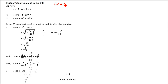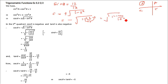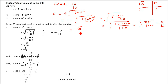Next question: sin θ = 12/13 and θ lies in the second quadrant. We need to find sec θ + tan θ. In the second quadrant, cos is negative, so cos θ = -√(1 - sin²θ) = -√(1 - 144/169) = -√(25/169) = -5/13.